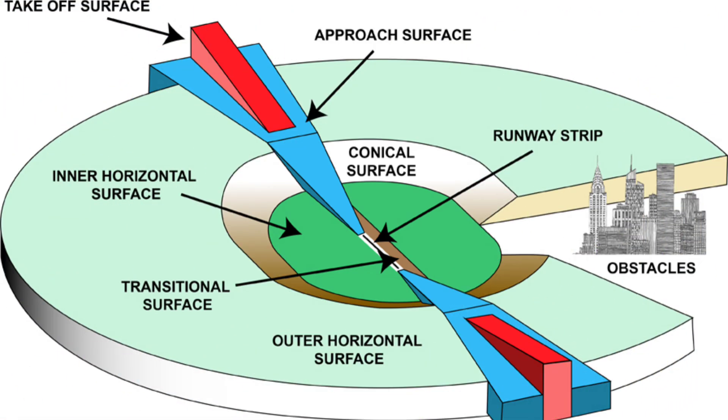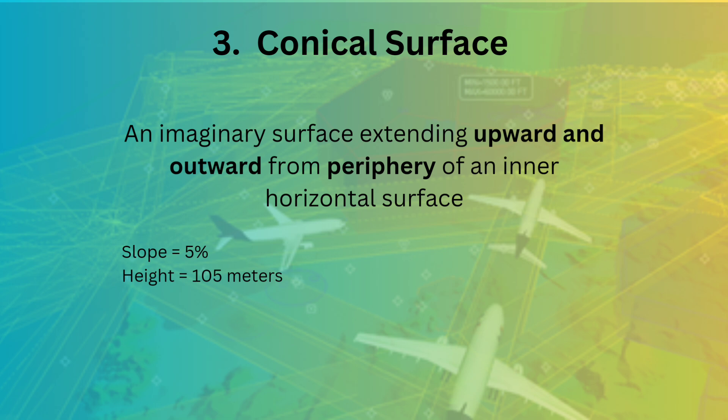In the given picture can you find the conical surface? Moving on to the definition of conical surface, it is an imaginary surface which extends upward and outward from periphery of an inner horizontal surface.